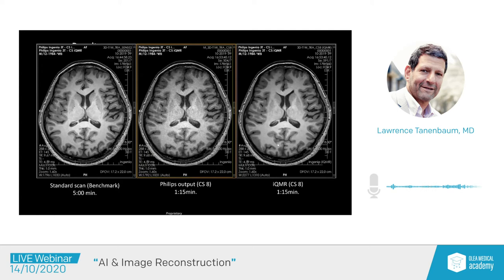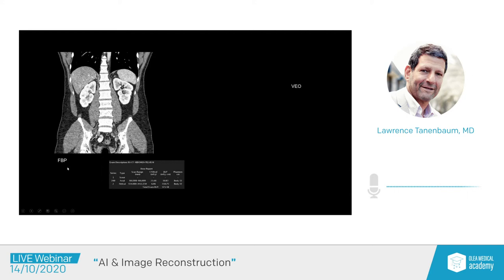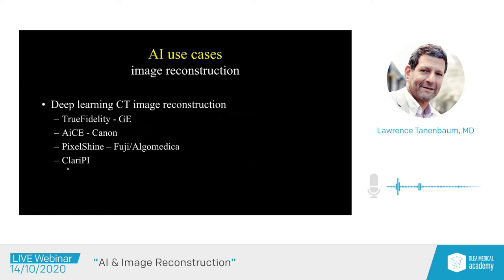Iterative reconstruction for CT allows us to make quality images with doses that, with traditional filtered back projection techniques, are really not satisfactory. At the low dose here — a DLP of 321 — images aren't very good, but applying model-based iterative reconstruction, we restore image quality to noise levels associated with high-quality images. Now, with true deep learning CT-based image reconstruction, commercially available from several vendors — GE has True Fidelity, Canon has ACE, Fuji and their partner Algo Medical have Pixel Shine, and a Korean company has Clarify — all doing the same thing: giving us back traditional image quality but with the benefits of dose reduction.